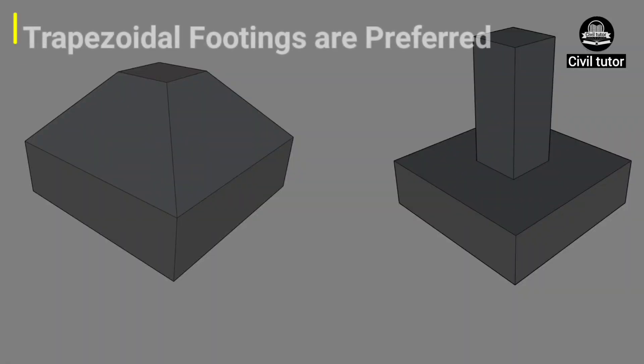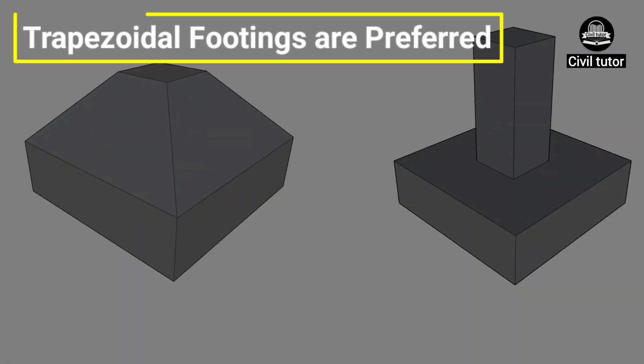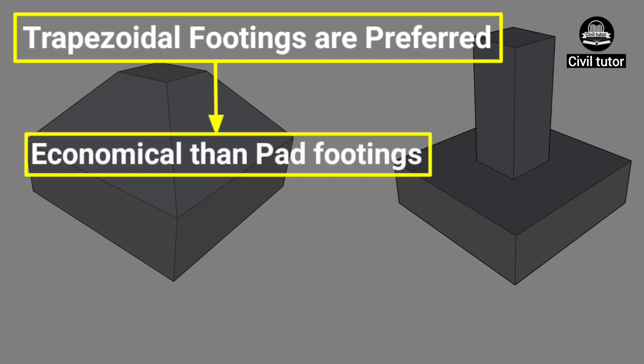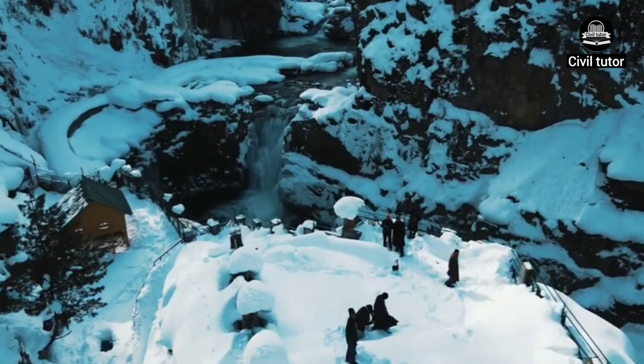Trapezoidal footings are preferred over pad footings, the reason being that they are economical in comparison to pad footings since they require less concrete and reinforcement.